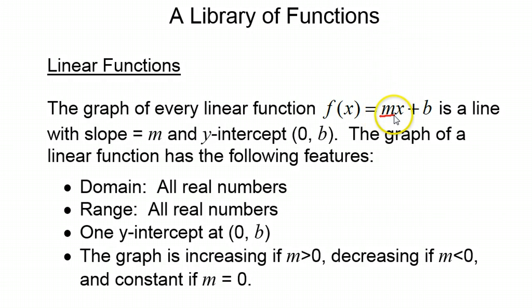If you look at the equation y equals mx plus b, m is the slope and b is the y-intercept. Now, the domain, as far as we're concerned, is all the numbers that can be put into the equation. That's going to be all real numbers because there's no number that would cause problems if I put it in for x. The range is also going to be all real numbers.